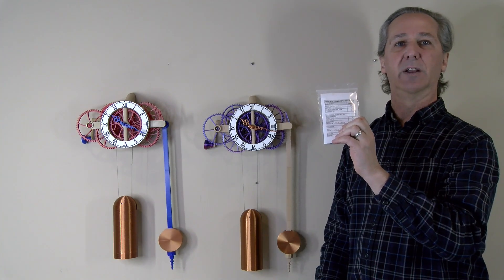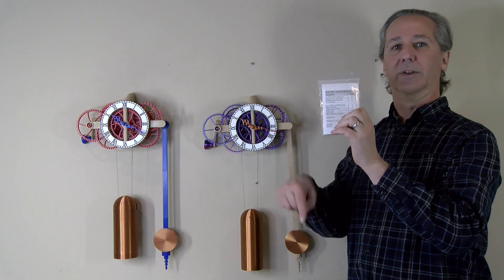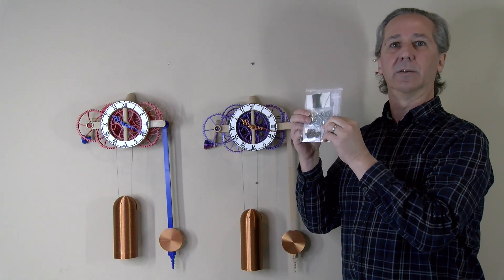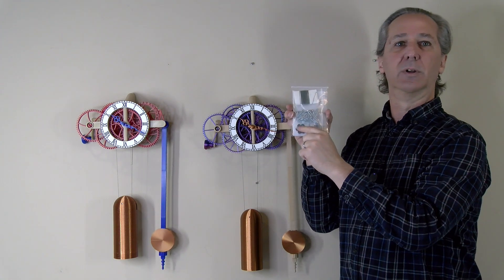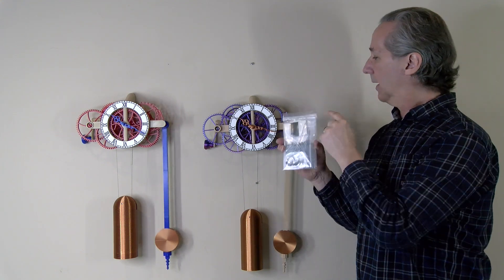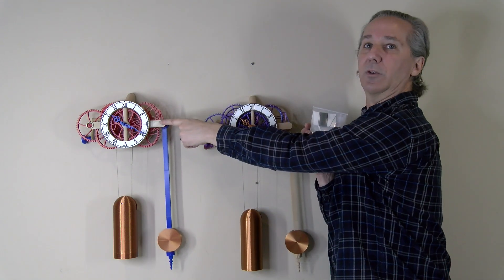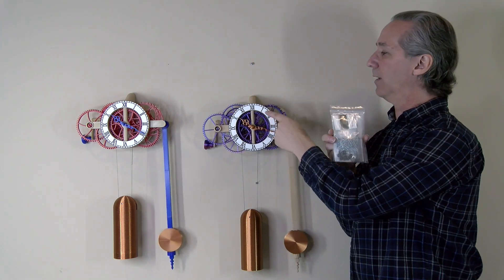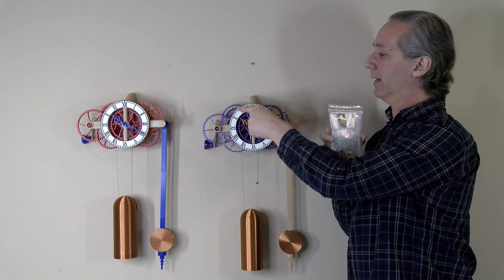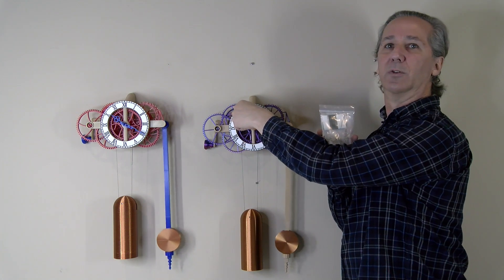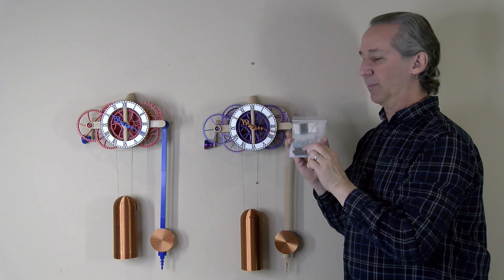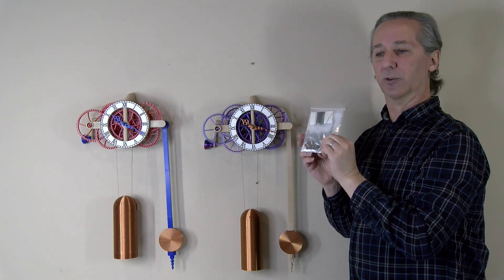I have parts kits available on my Etsy store, the link will be down below, and that kit will be updated to include the extra bearings. The original design uses five bearings, the new design uses eight if you fully populate those bearings. You can also use 3D printed bushings, but I recommend the bearings in those positions.